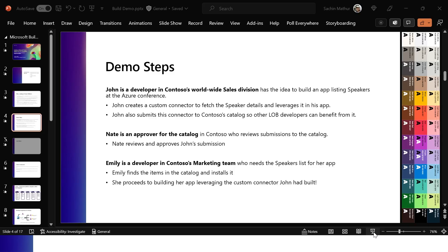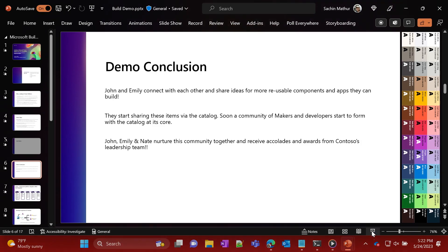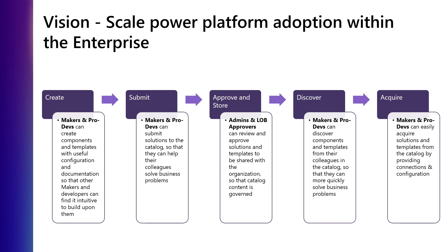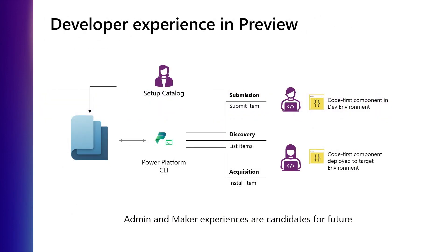So that's the end of the demo segment. What you just saw is the end-to-end process for the catalog: it starts with somebody creating a reusable component or template and submitting it to the catalog. Optionally, there can be approvals where an organization admin or line-of-business approver can review the artifact. Once approved, it can be discovered by other makers and developers, and they can install it to their target environments. There are instructions available in the public docs to set up a catalog in a Dataverse environment of your choice, launching today in public preview.